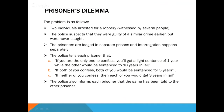Prisoner's Dilemma — this is one of the most extensively studied problems in game theory with many interesting interpretations in a wide variety of situations. There are two individuals arrested for a robbery witnessed by several people. The police suspects they were guilty of a similar crime earlier but were never caught. They are held in separate prisons and interrogated separately. The police tells each prisoner: if you are the only one to confess, you get one year; if the other confesses and you don't, you get 10 years; if both confess, both get five years; if neither confesses, each gets three years. The police informs each prisoner that the same has been told to the other — this is termed common knowledge.